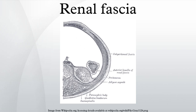In front of the fascia, anterior to the perinephric space, is the anterior pararenal space, which contains the pancreas, ascending and descending colon, and the second through fourth parts of the duodenum. The fascia posterior to the perinephric space was named Zuckerkandl's fascia.